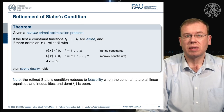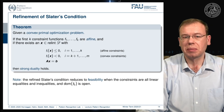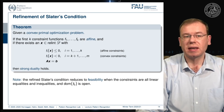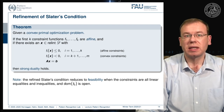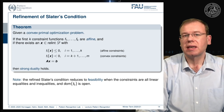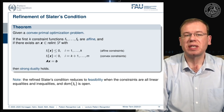This refined Slater's condition reduces to feasibility when the constraints are all linear equalities and inequalities and the domain of f0 is open. In these cases, we simply require feasibility of x.